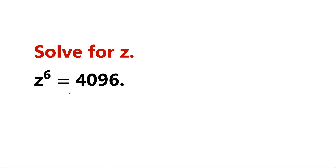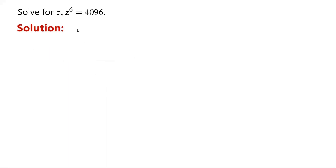Solve this equation. This is a polynomial equation of degree 6. By rearranging the equation, we can now write z to the power of 6 minus 4,096 equals 0.